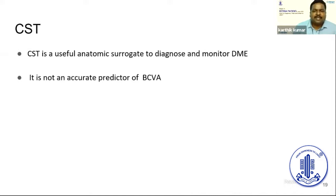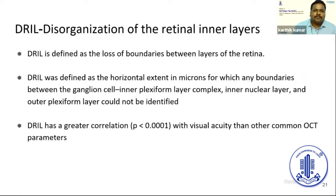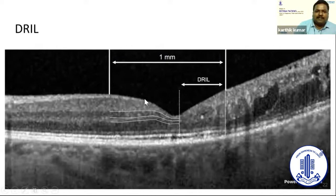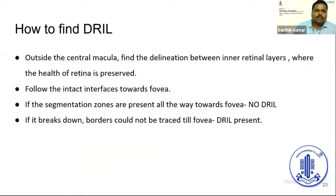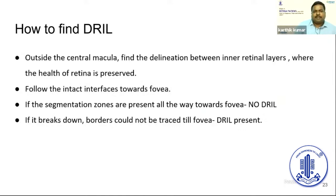We must search for other biological markers to explain prognosis to the patient, who ultimately cares only about visual acuity. One such biomarker is DRIL — disorganization of retinal inner layers — which is defined as the loss of boundaries between the layers of the retina, specifically the horizontal extent in microns for which the boundaries between the ganglion cell inner plexiform, inner nuclear, and outer plexiform layers could not be identified. To identify DRIL, trace the layers from outside the central macula toward the fovea; if segmentation zones are not present at the fovea, DRIL is present.